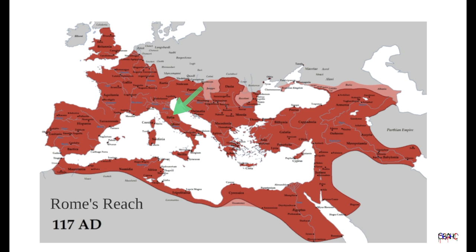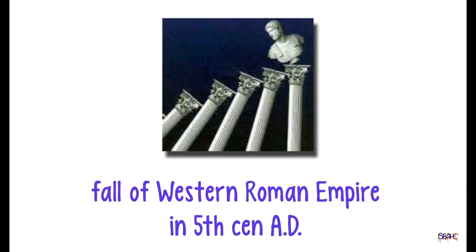The empire provided stability, built roads and aqueducts, and generally made life sweet if you were a Roman citizen. Roman influence in Western Europe lasted for about a thousand years, but eventually collapsed due to political corruption, overreach, and pressures from the migration of non-Roman peoples.